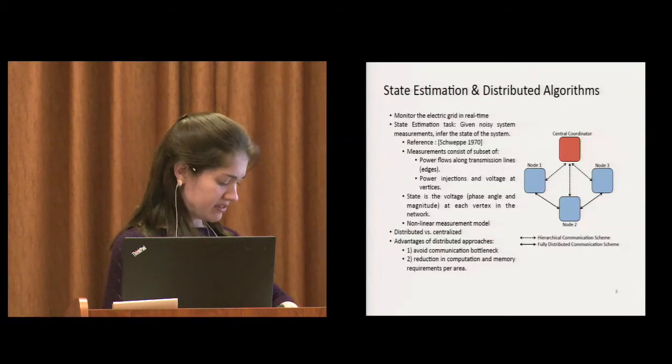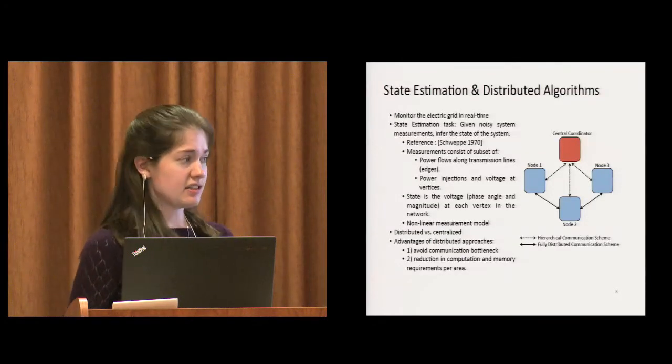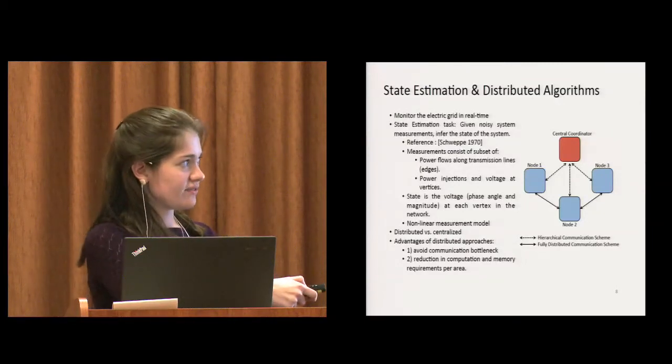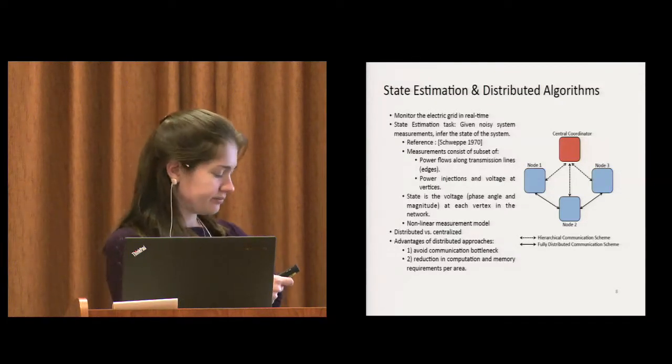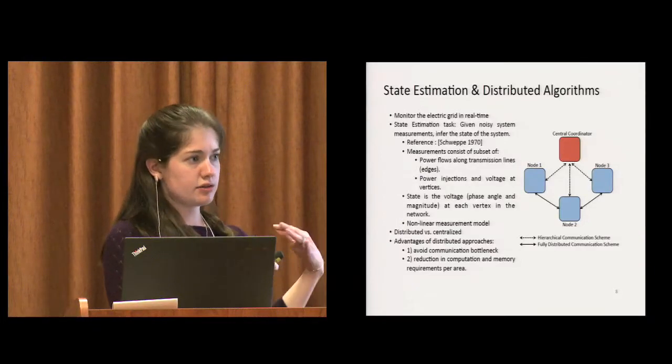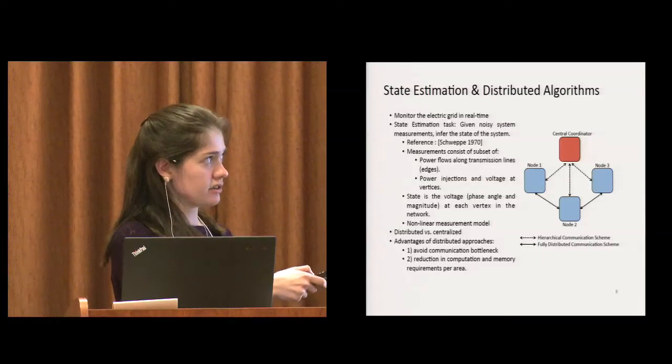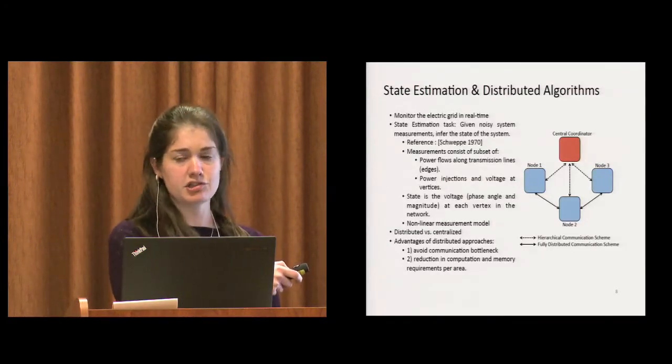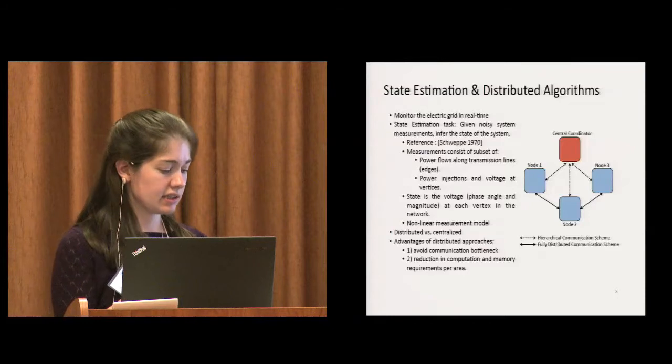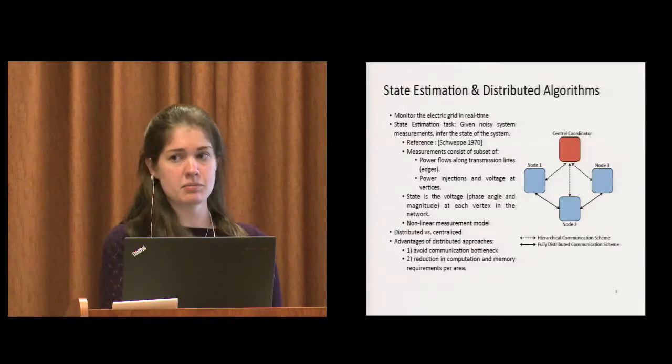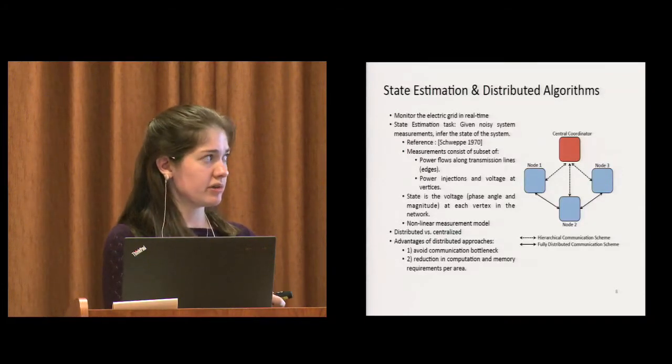We're interested in doing state estimation in a distributed way. Let's look at this figure to see what I mean by that. You can consider this just to be some abstract sensor network where the sensors are blue. In a traditional centralized approach, these sensors will take measurements and then send them all to the central coordinator in red, who does the calculation and then sends back the result to each of the sensors. In contrast to this, we want to do a fully distributed scheme. We eliminate the central coordinator, and we only allow communication of information between neighboring nodes in the network.